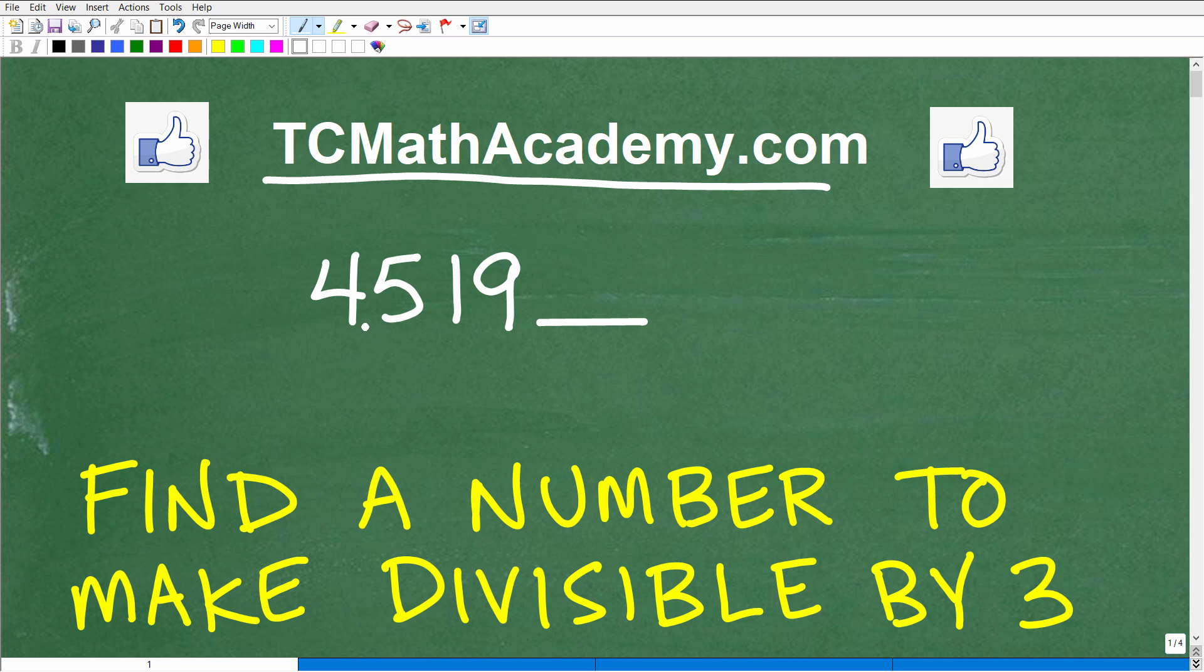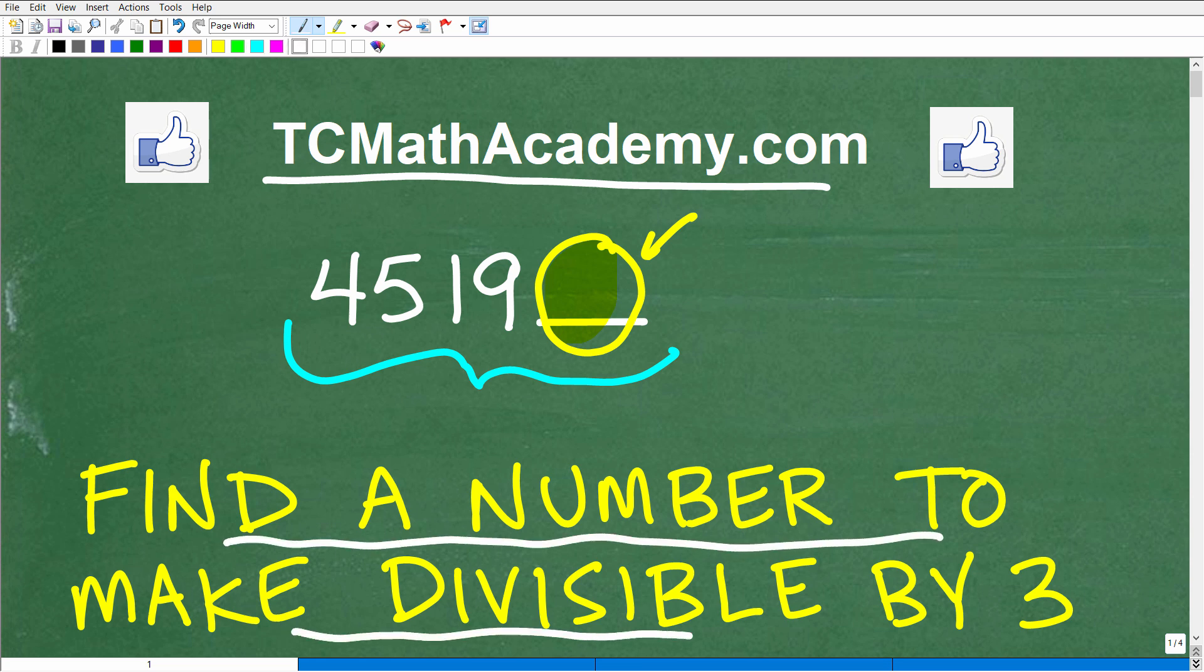We have a mystery number here, and the digits of that number are 4519. We're looking for one more digit to fill this place value right here, such that this entire number with this number you plug into it is divisible by three. So we want to find a number to make this entire number divisible by three.